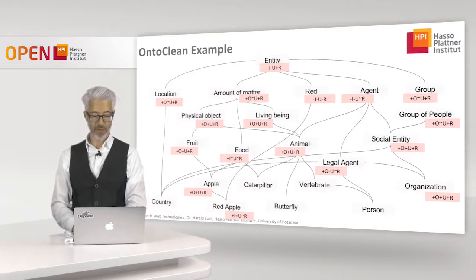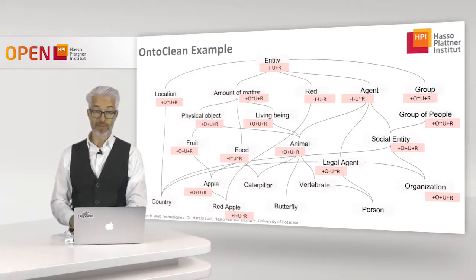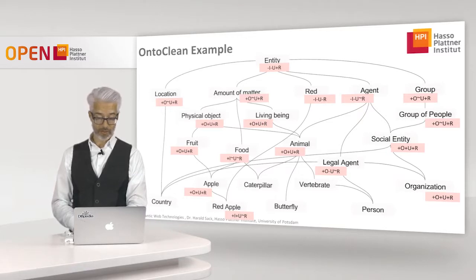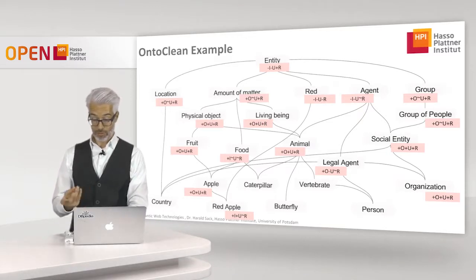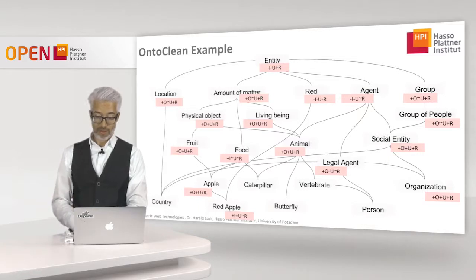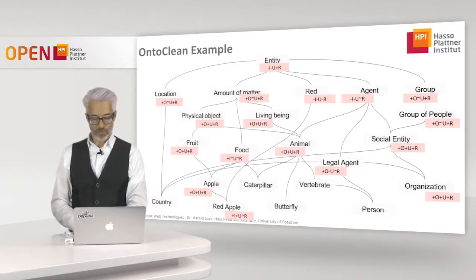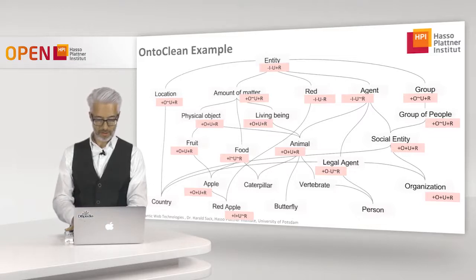Apples that are red are considered a whole — plus U. But of course, if the apple rots, it is still an apple but not necessarily red anymore. So red apple is anti-rigid.